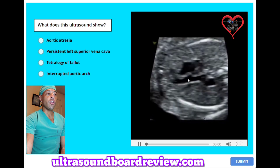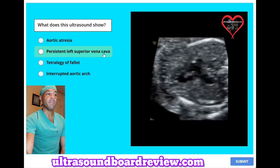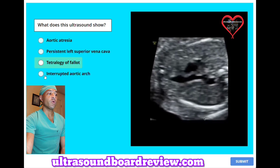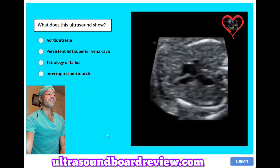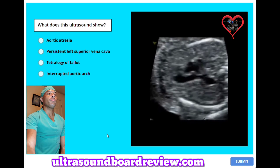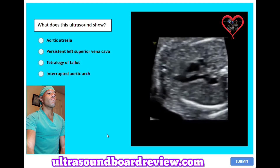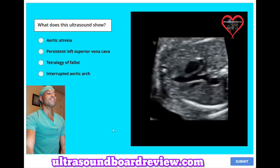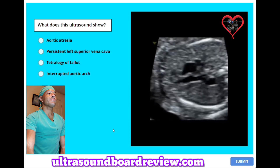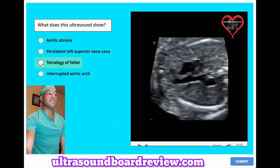What does this ultrasound show? A, aortic atresia. B, persistent left superior vena cava. C, tetralogy of Fallot. Or D, interrupted aortic arch. The answer is C, tetralogy of Fallot.